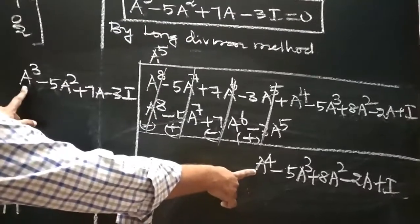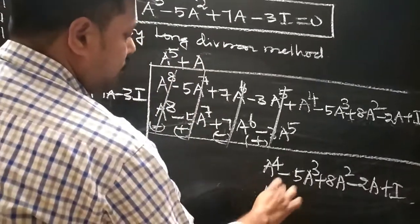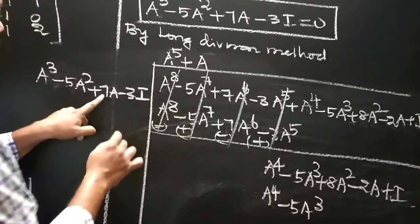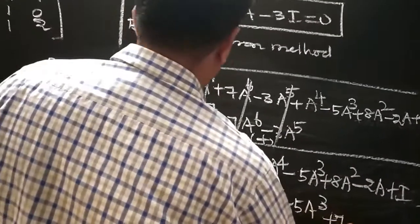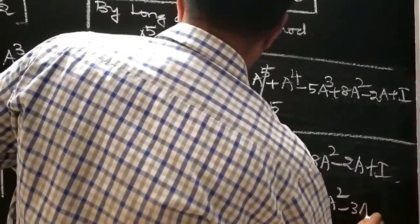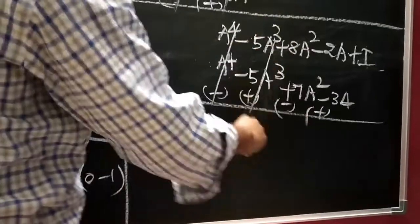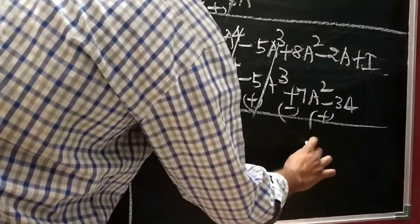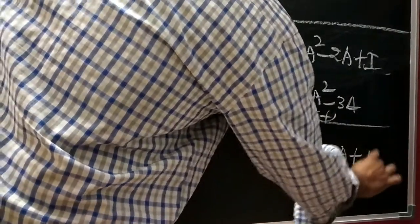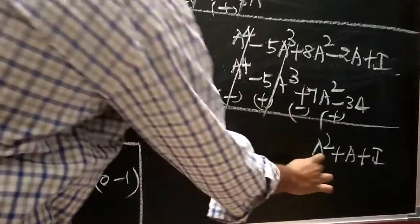Changing the sign and cancelling terms, the remaining expression becomes A power 4 minus 5A cubed plus 7A squared minus 3A. Continuing the division: change the sign, cancel terms — 8 minus 7 gives 1. So the quotient is A power 5 plus A, and the remainder is A squared plus 3 minus 2 plus A, which simplifies to A squared plus A plus I.